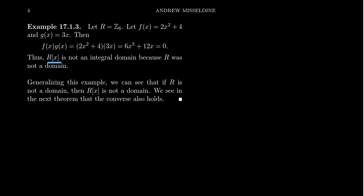We can see here that r[x], the polynomial ring, might not be an integral domain. In particular, if the coefficient ring is not a domain, we can mimic this type of situation and show that r[x] is likewise not going to be a domain. Generalizing this example, if r is not a domain then r[x] is not going to be a domain.